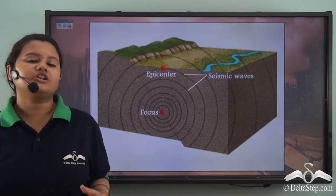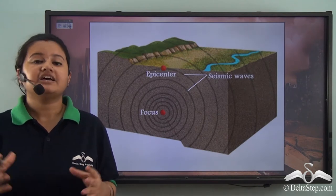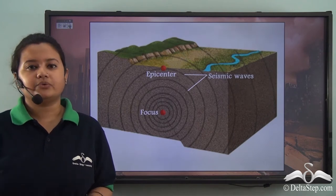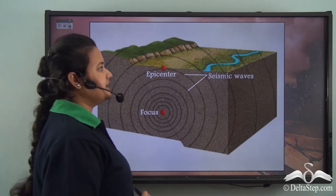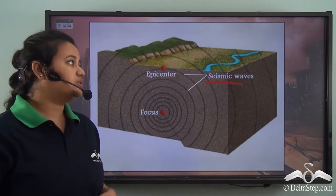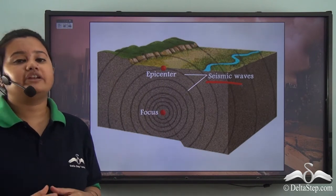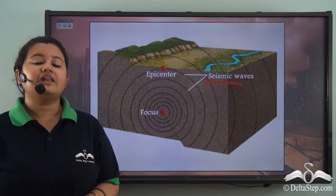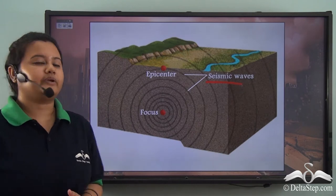We already know what is an earthquake. An earthquake is a sudden and intense shaking of the earth's surface. During an earthquake, the energy is released in the form of waves, and these are known as seismic waves. We have already studied about different types of seismic waves and how an earthquake is measured. Now let us see what are the factors responsible for the occurrence of an earthquake.